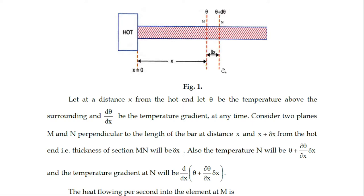The temperature at N will be θ + (∂θ/∂x)·δx by the definition of partial differentiation. The temperature gradient at N will be d/dx of [θ + (∂θ/∂x)·δx]. These are the temperatures and temperature gradients at planes M and N.